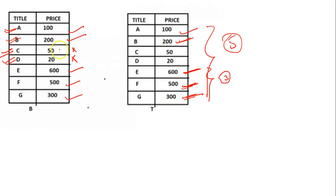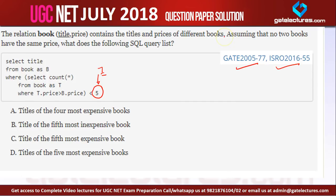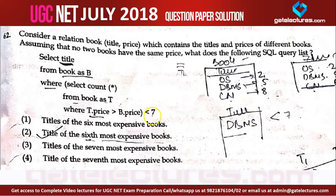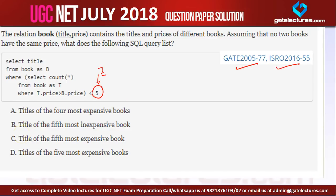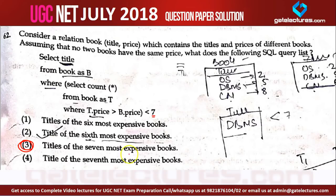Which means you are finding the titles of the 5 most expensive books — these are the 5 most expensive books coming from the result. You take only those books where the count is less than 5. In this query the logic is same, only the number is different — replacing 5 with 7, this query finds the titles of the 7 most expensive books. Option 3 is the right answer, because the condition is less than 7, so we are taking titles of the 7 most expensive books.